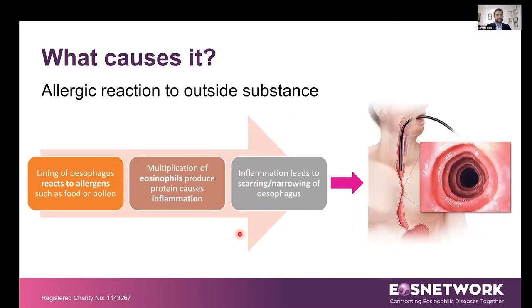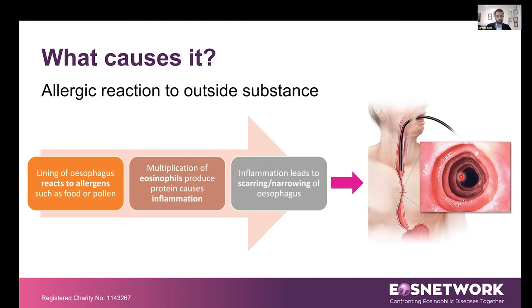So what exactly causes it? In a nutshell, it's an allergic reaction to an outside substance — similar to asthma. In asthma, you get exposed to an allergen and get narrowing of the windpipes and feel short of breath. Here, you get exposure to an allergen, you have narrowing of the food pipe, and food gets stuck. The lining of the esophagus reacts to allergens such as food or pollen — most commonly food — leading to multiplication of the eosinophils, which produce a protein that causes inflammation, scarring, and narrowing of the esophagus.